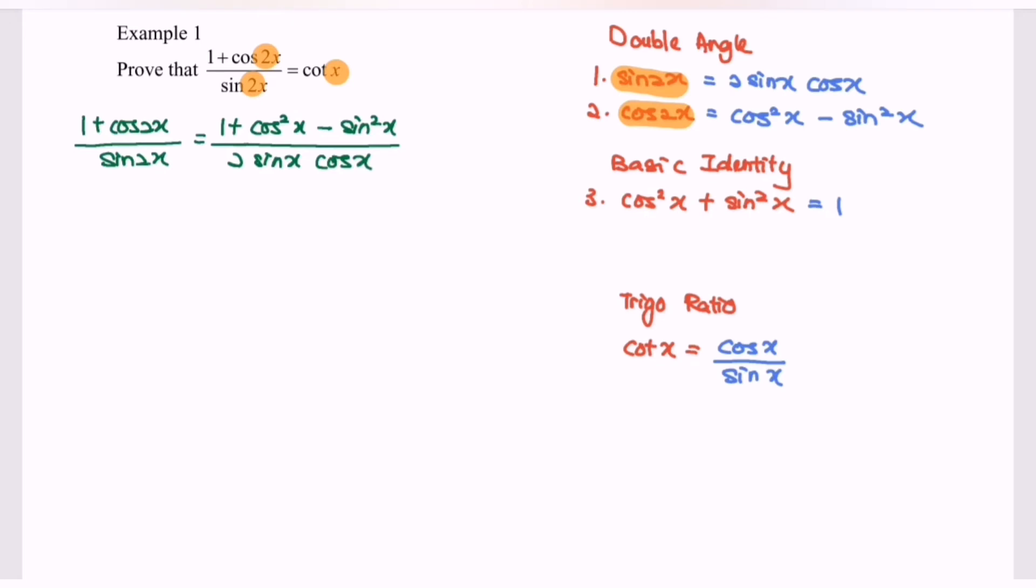Now by rearranging the situation, we have 1 minus sine squared x plus cos squared x over 2 sin x cos x. I notice that 1 minus sin squared x, by referring to the basic identity.